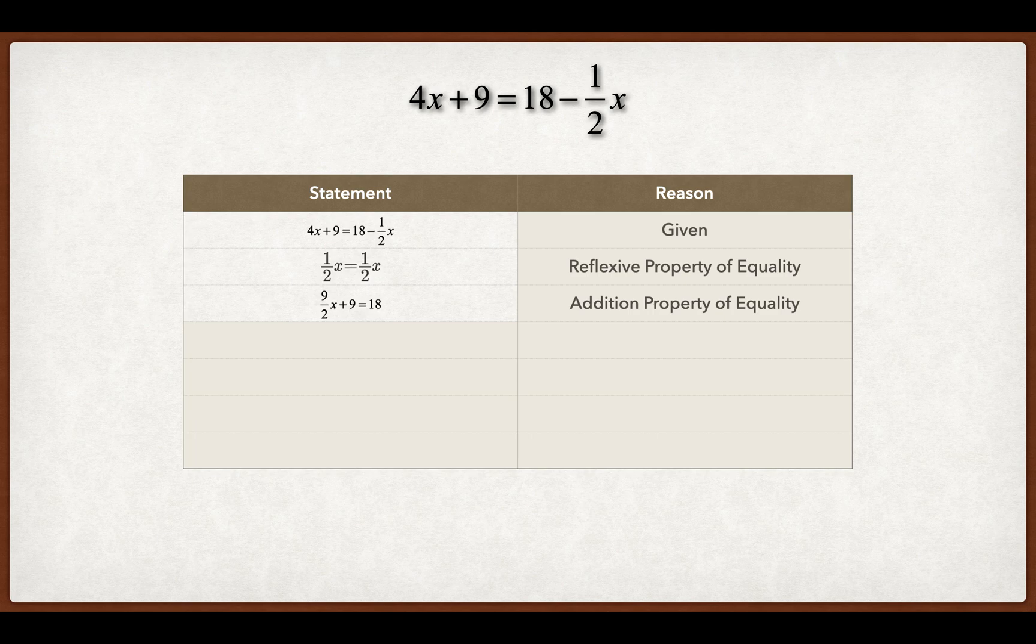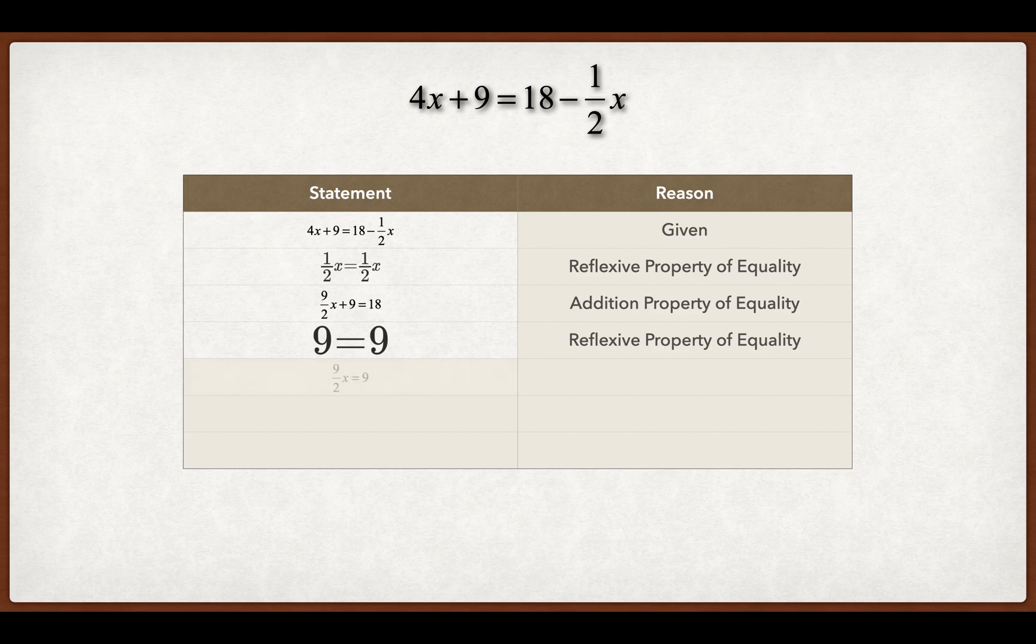Now if I was solving this normally, the next thing I'd do is I'd subtract nine from both sides. So I'm going to say nine equals nine. That's reflexive. But then that gives us nine halves X is now equal to 18 minus nine is nine. So that was the subtraction property of equality.